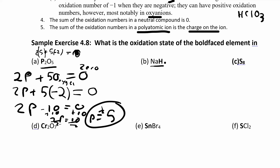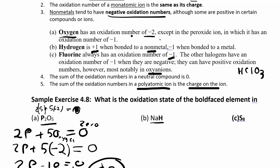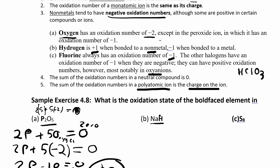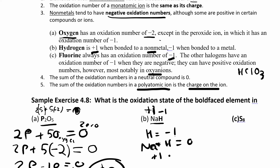For sodium hydride (NaH): this is a metal with hydrogen. When hydrogen is with a non-metal it's positive one; when it's with a metal it's negative one. So hydrogen here is negative one. Sodium is a group one metal so it likes to be plus one. Setting up: sodium + hydrogen = 0. Sodium is plus one, so hydrogen has to be negative one.